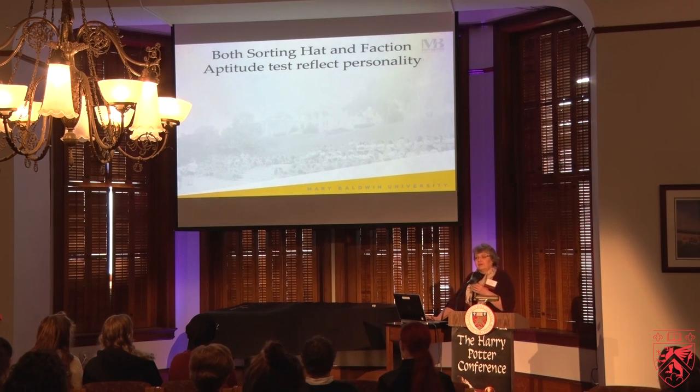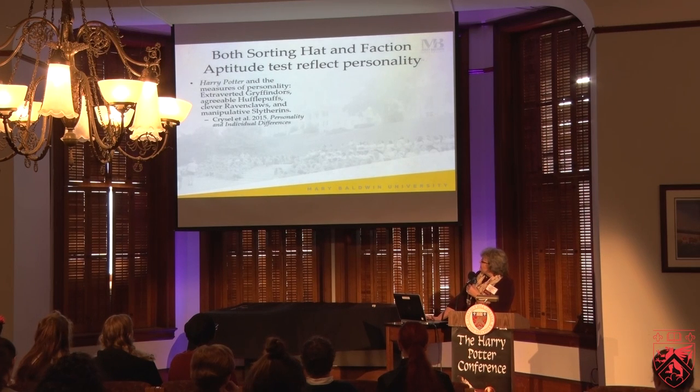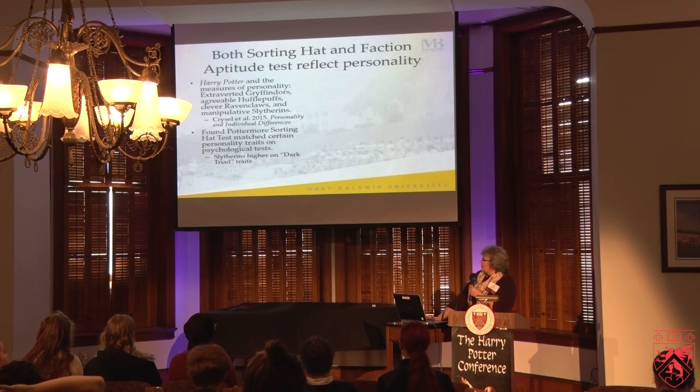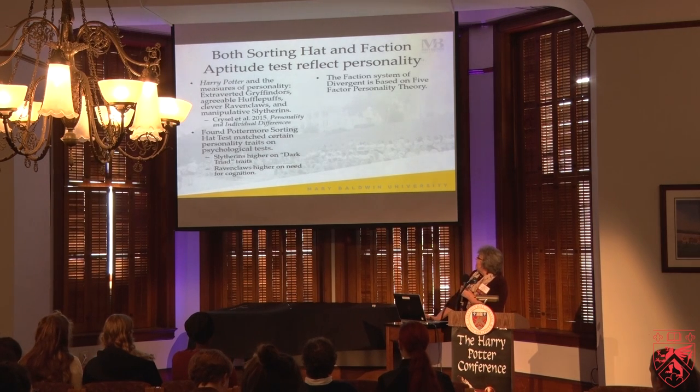Both the Sorting Hat and the faction system in Divergent have been shown to have connections to actual psychological testing. A study was done in 2005 by Laurel Kreisel, where she had people take their Pottermore sorting test and then gave them actual personality tests from psychology. She found relationships — particularly that people sorted into Slytherin scored higher on the dark triad traits such as narcissism, Machiavellianism, and psychopathy — and that Ravenclaws, I'm a proud Ravenclaw myself, scored higher on their need for cognition and need to be recognized for their intelligence.